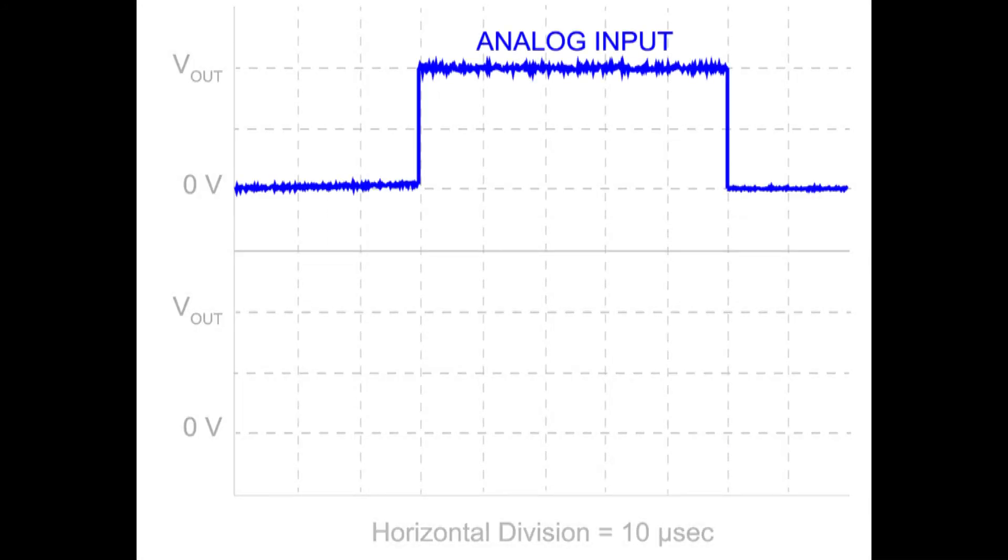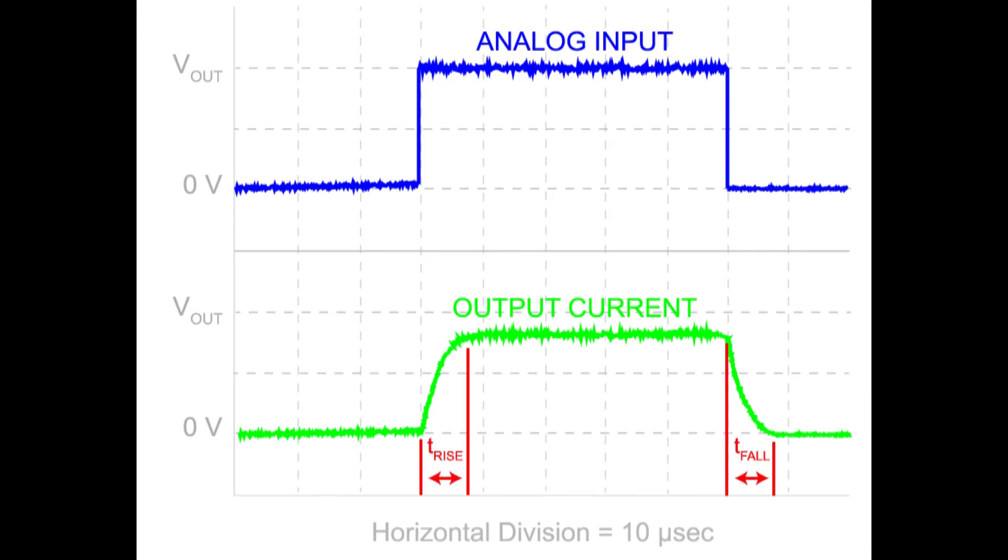If a square wave is applied at the analog modulation input, the current source will respond within the rise time. When the current source is disabled, the current level through the diode will fall to residual levels within the fall time.